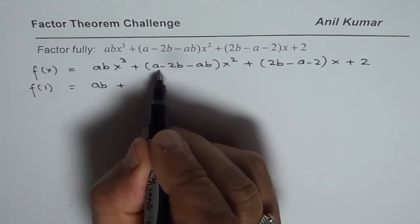Subtracting, the first term cancels out. There is only one term with ab, so we get (a − 2b) remaining. The −abx² and −abx² cancel out, leaving us with (a − 2b)x².